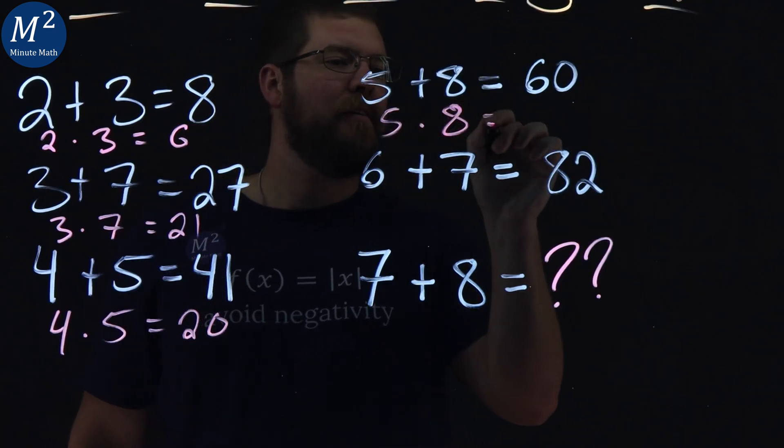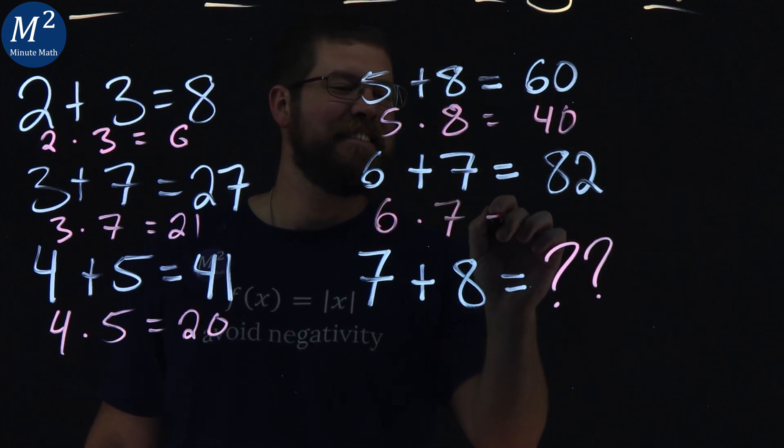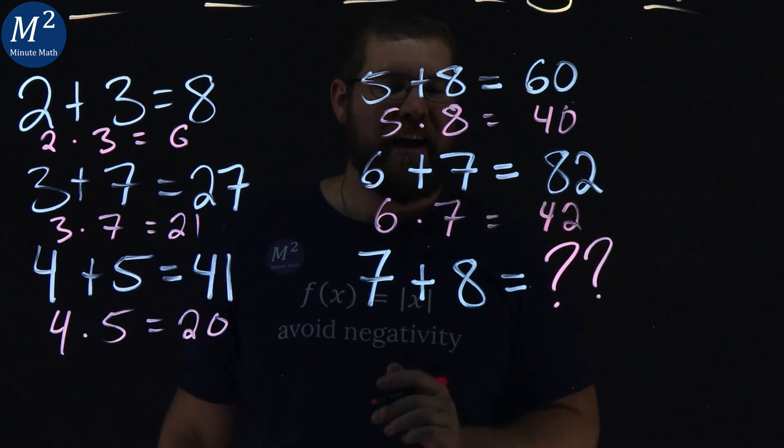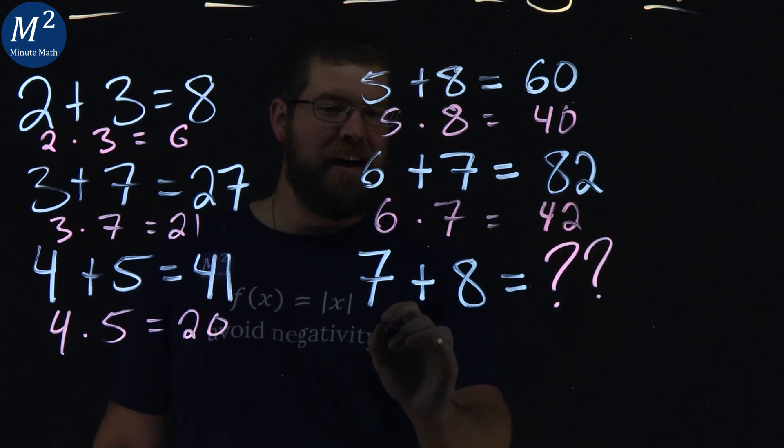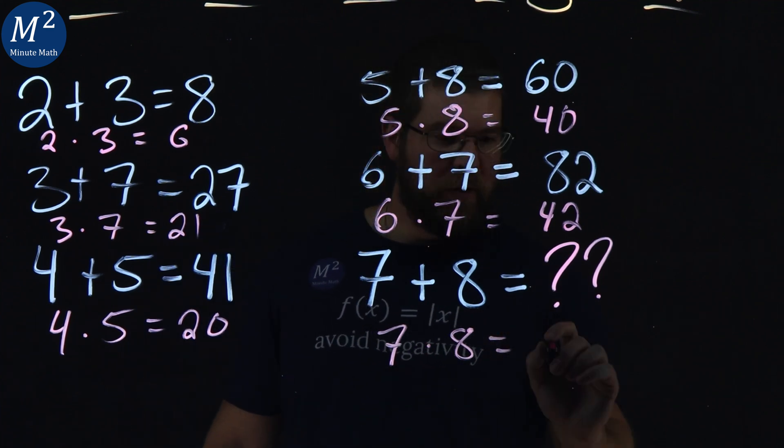5 times 8 equals 40, I almost messed that one up. 6 times 7 is 42, and then we have 7 times 8 here, that gives us a good old 56.